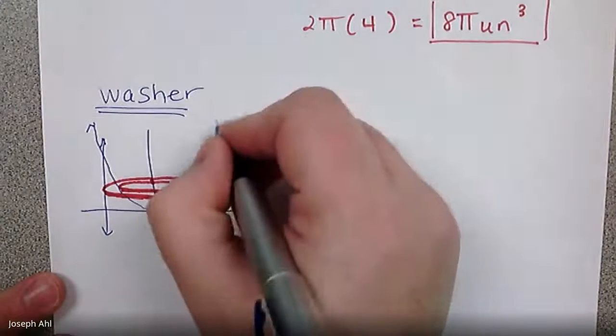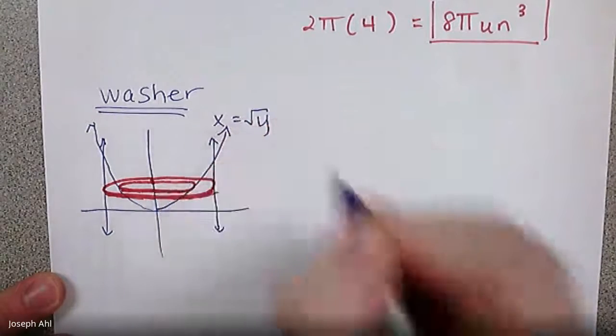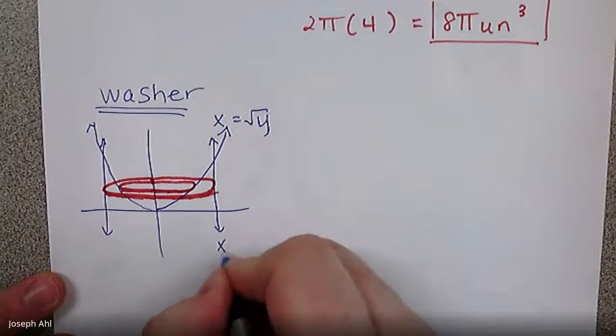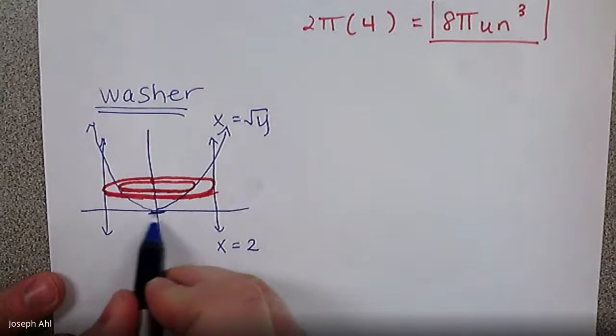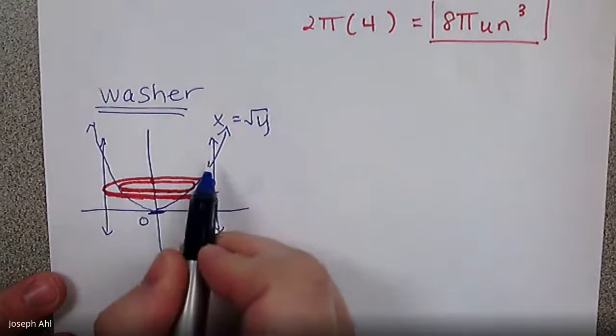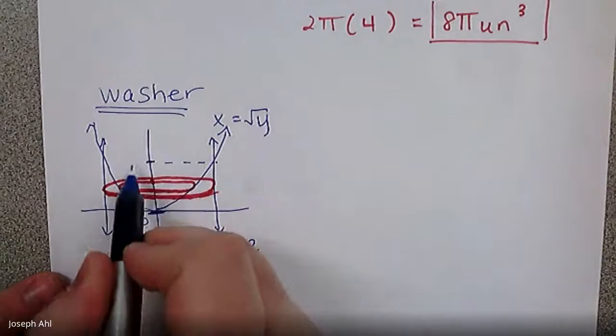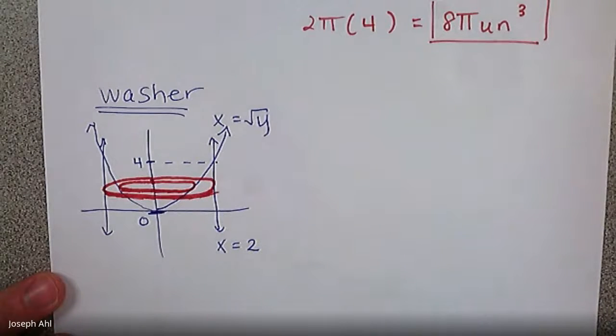So the equation y equals x squared, this is really x equals radical y now. And we had that this is the line x equals 2. So your bounds of integration have to be on the y axis. We're still going from zero. But if x equals 2, we know that the upper bounds is going to be an upper limit of 4 on the y axis.